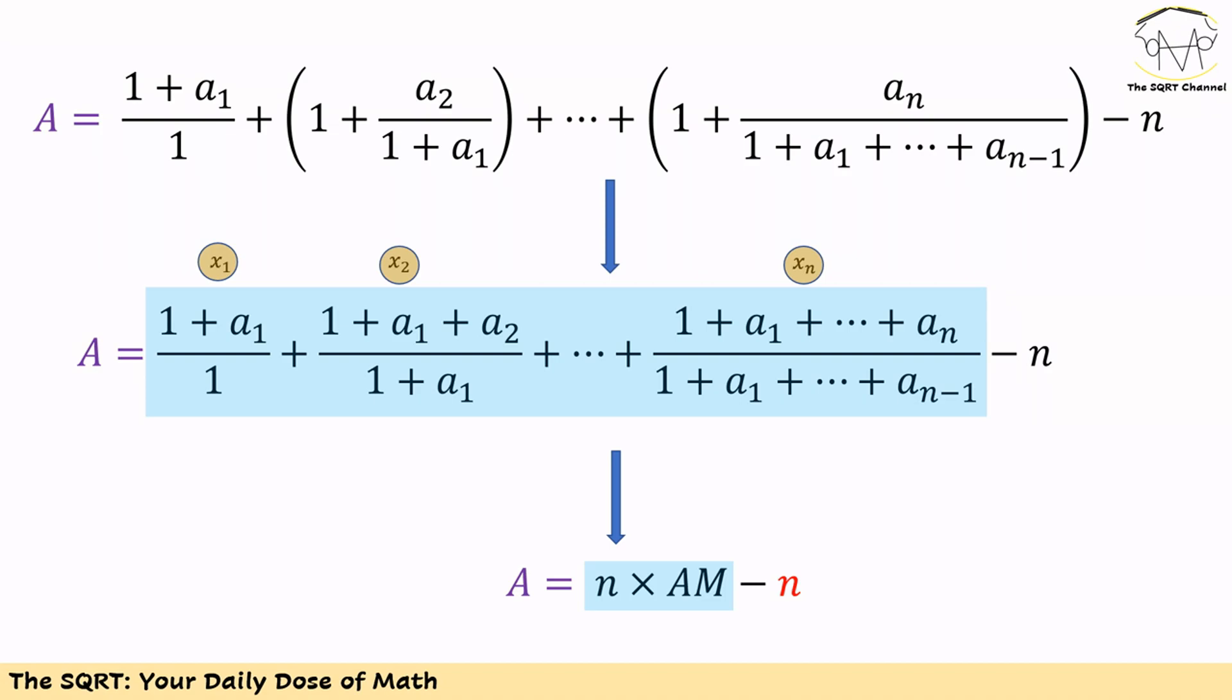Now we have an expression that we are going to simplify. The expression has n terms. Let's assume these n terms are n separate terms and we have the sum of them. This basically means we have arithmetic mean times n. Instead of writing the whole expression, we write n times AM, which is arithmetic mean, and at the end we have minus n.